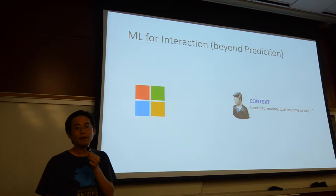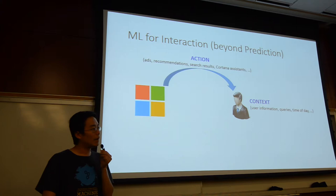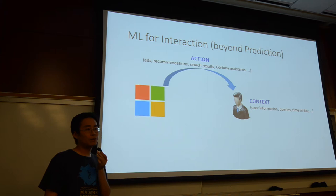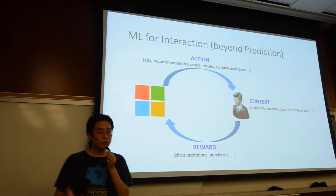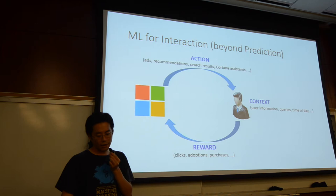The company sees contextual information — like whether the user is male or female, their income, the query submitted to the search engine, or the time of day. Depending on what the product is, Microsoft can take one or a few actions to serve the user — for example, show them ads, return a search result page, or in the cell phone, schedule a meeting on a calendar. In return, we observe whether the user is happy or not — that's the reward we try to maximize. Rewards are usually in terms of clicks, adoptions in recommendation problems, or purchases in advertising.